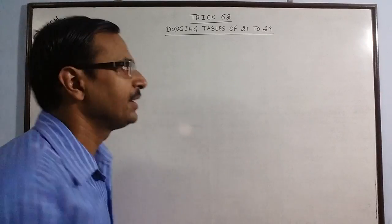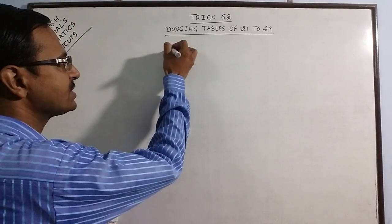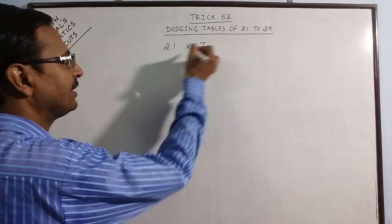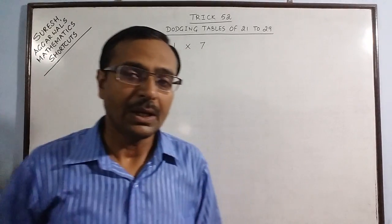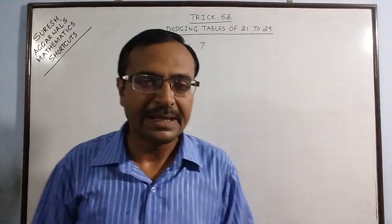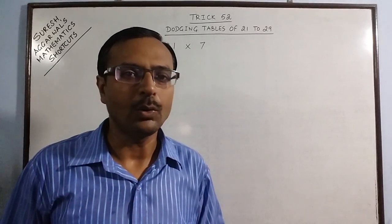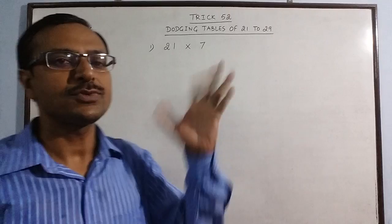Let us try and understand this method. Now suppose we have a question 21 multiplied by 7. So you are asking the child what is 21 7s.